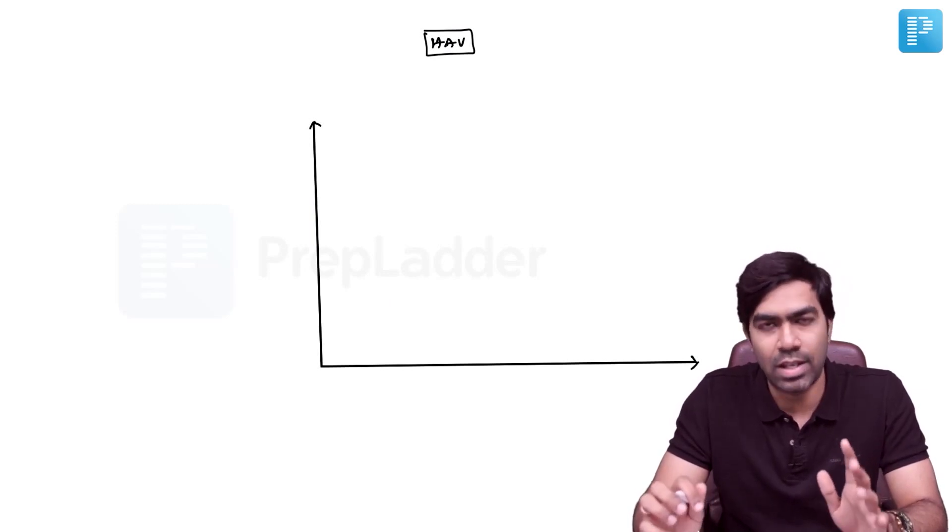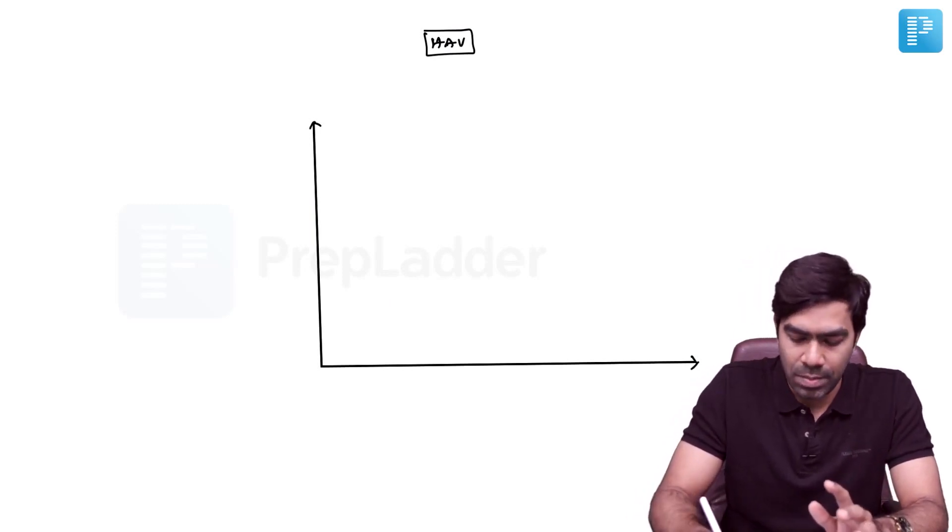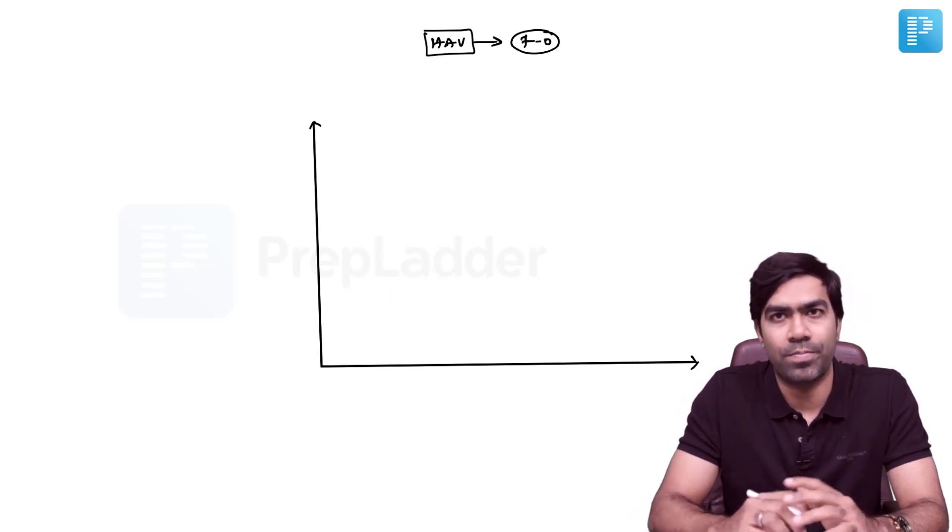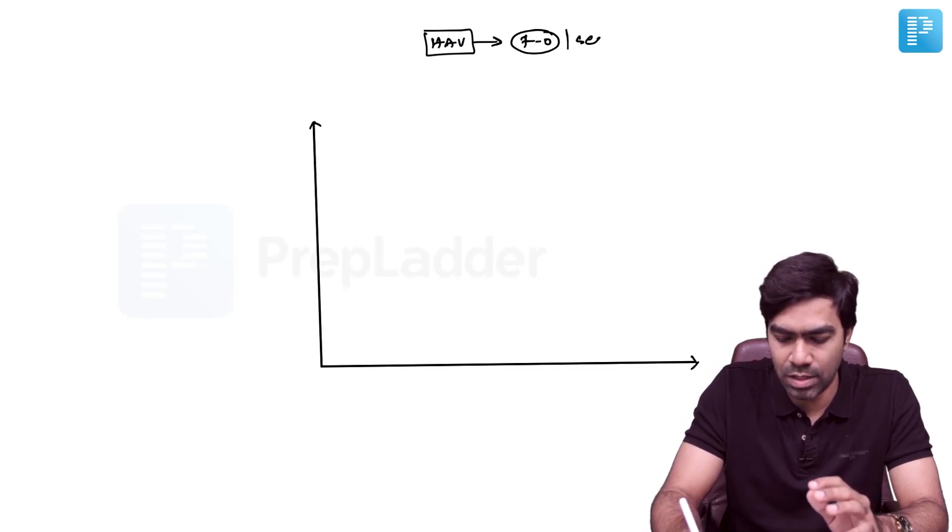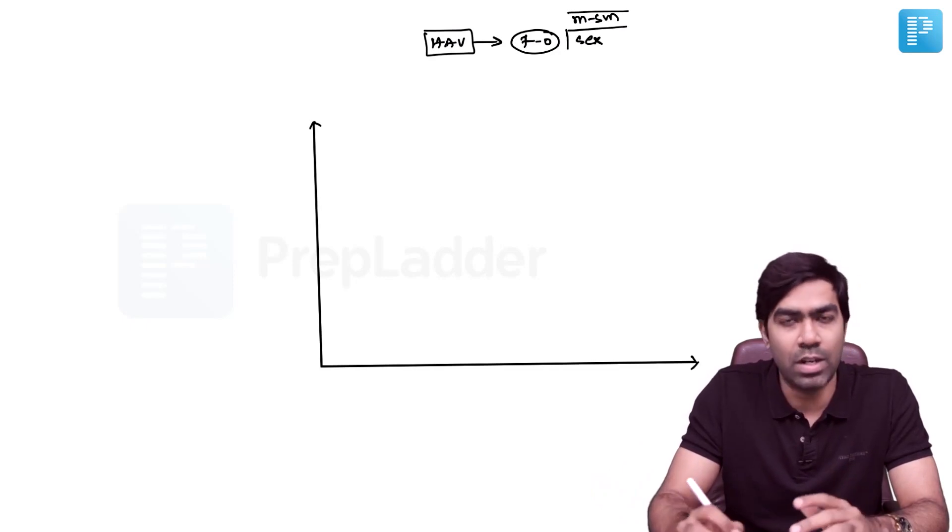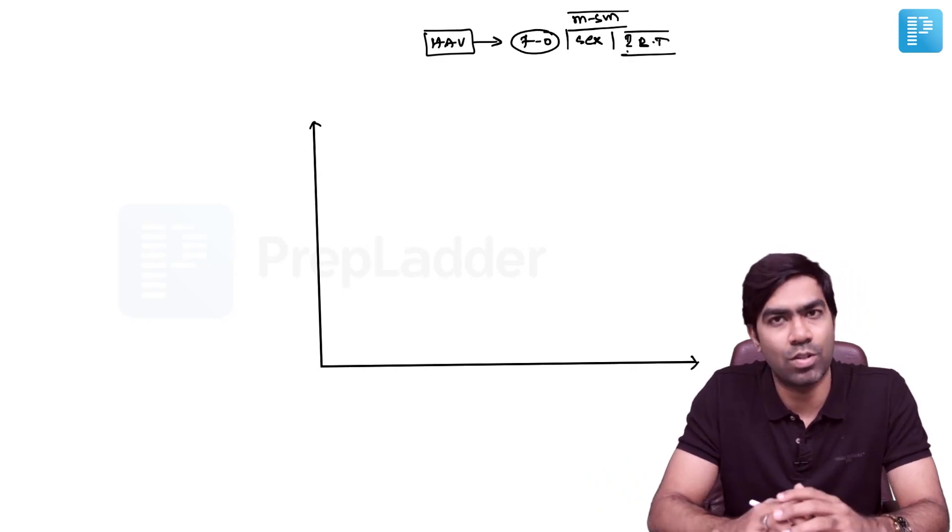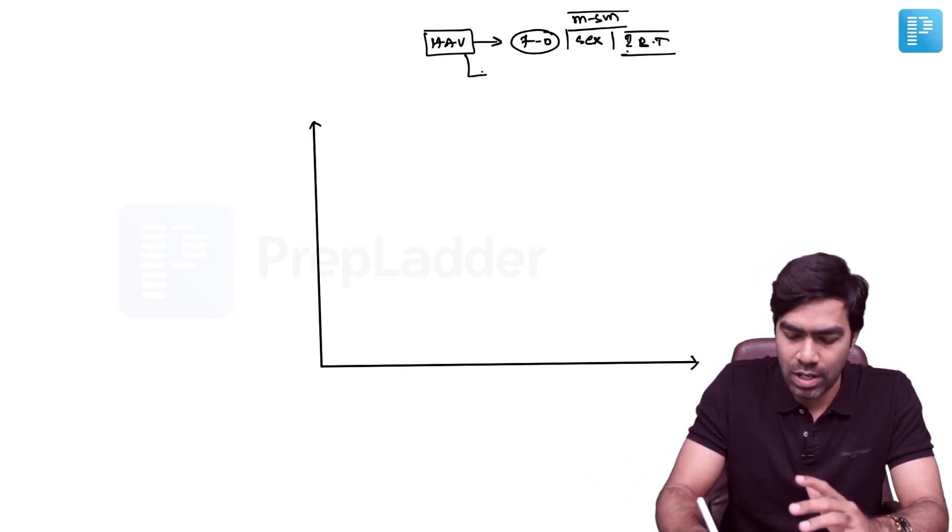First, let's finish off Hepatitis A virus. We know the most important route of transmission is the fecal-oral route, but there are some descriptions about sexual transmission, especially in men who have sex with men. Rare case reports of blood transfer-related Hepatitis A virus also exist.